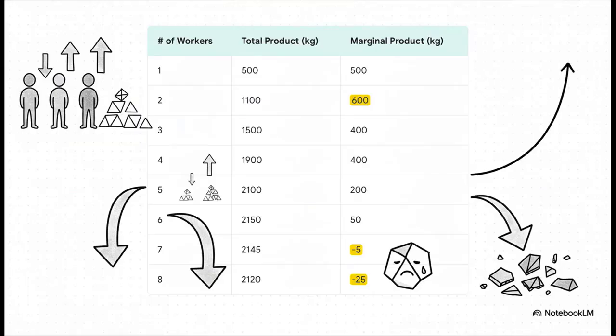Let's zero in on that marginal product column. Our first worker brings in 500 kilos. But look at this: the second worker adds even more, 600 kilos. For a moment there, things are actually speeding up. We're in a phase of increasing returns. But then the party's over. The third worker adds less, just 400 kilos. And you can see the trend. The extra amount from each new worker just keeps going down, down, down until we hit worker number seven.